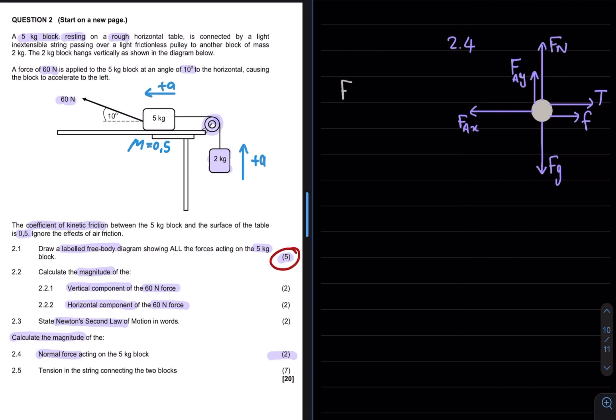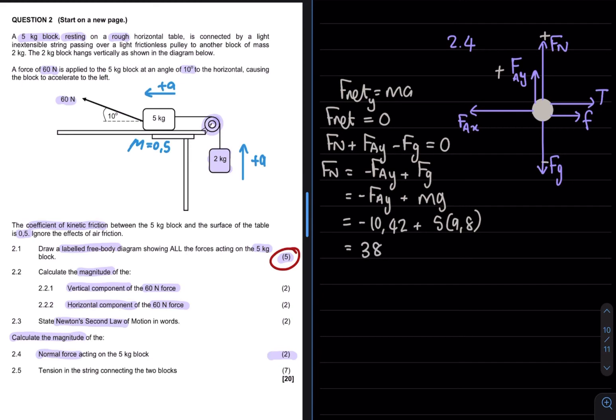Applying Newton's second law I can see that we have no acceleration in my Y plane. Therefore the net forces in my Y direction would be equal to 0. I would take upwards as positive and downwards as negative. The vertical component we already calculated as 10.42 and gravity we can calculate by saying mass times gravity which gives me a value of 38.58 Newton.